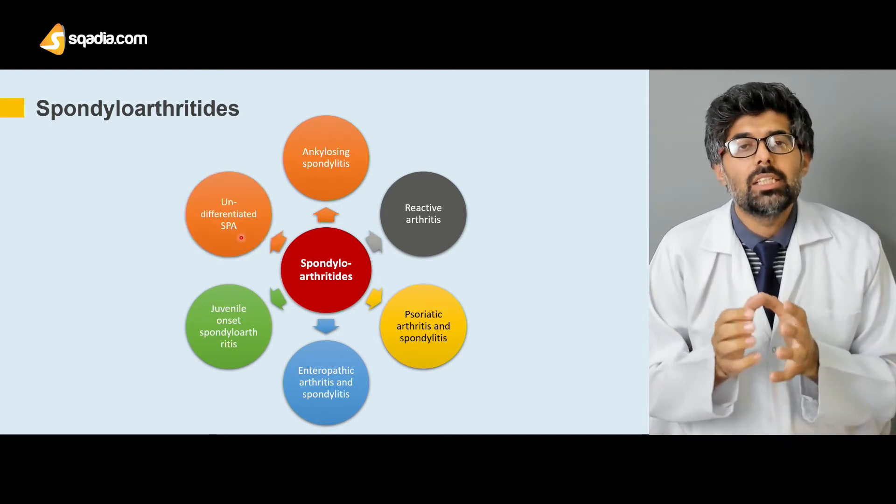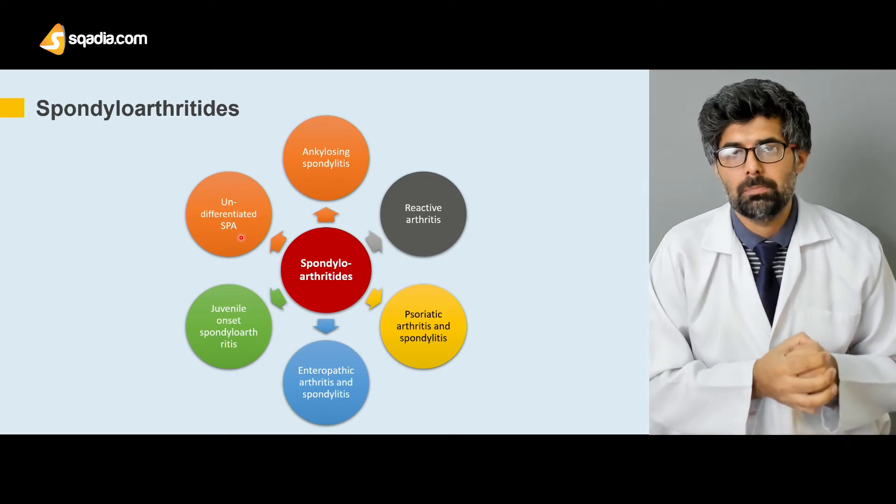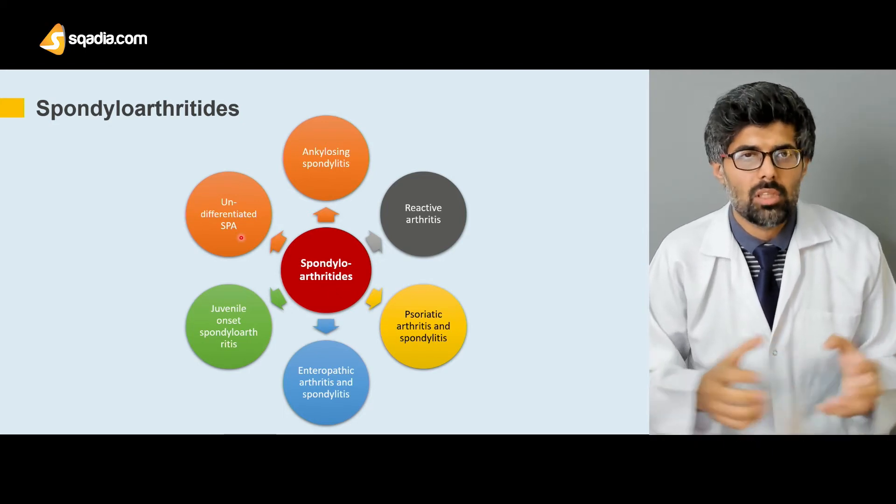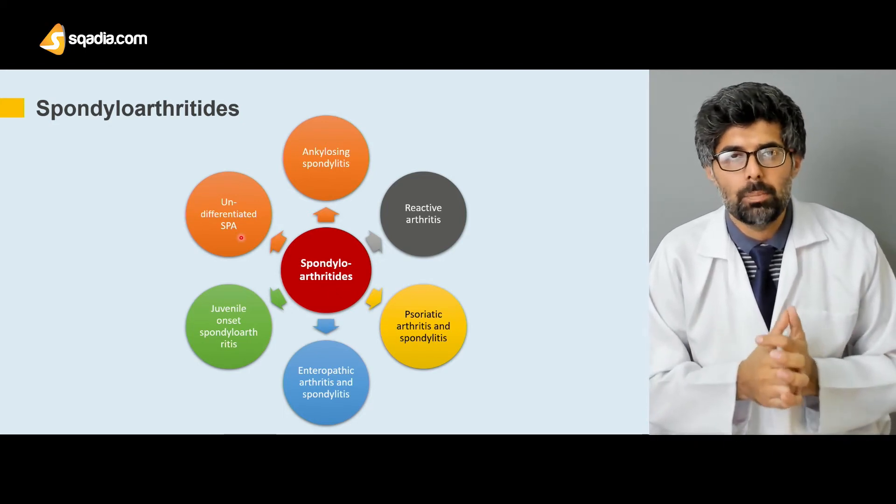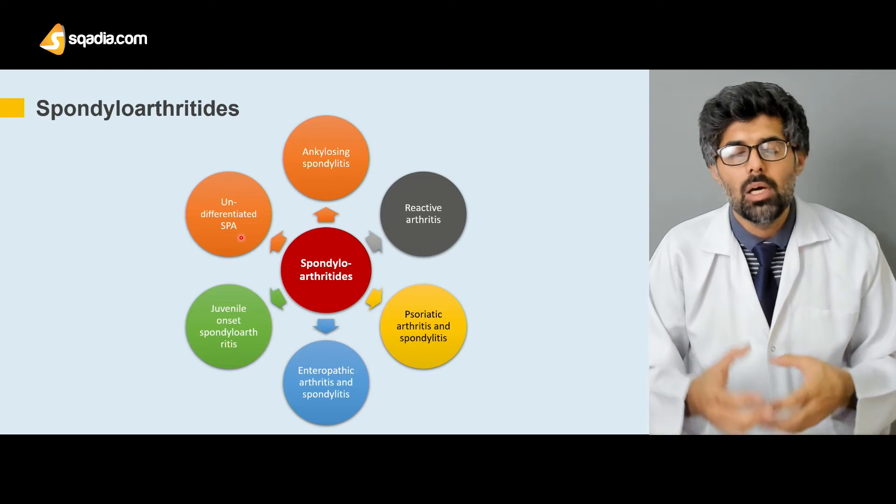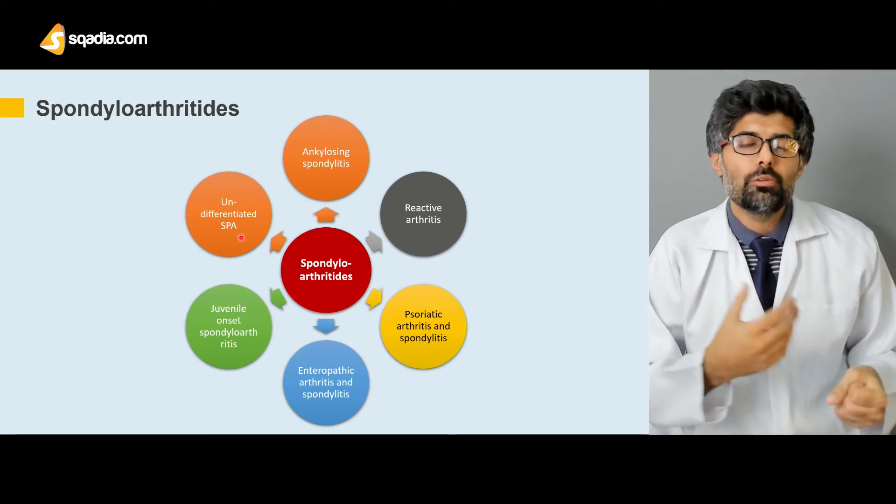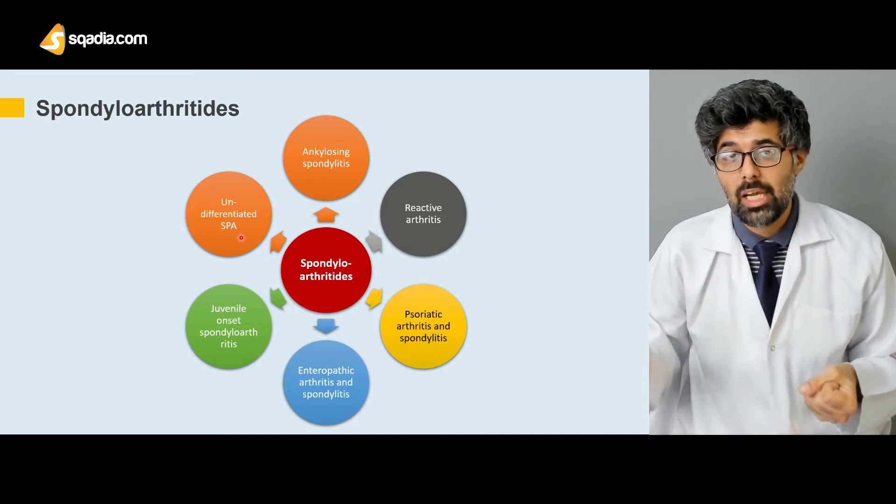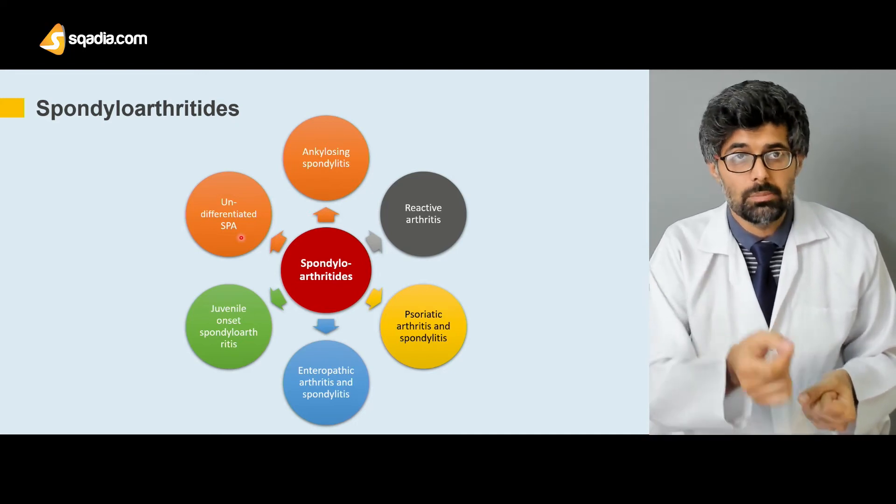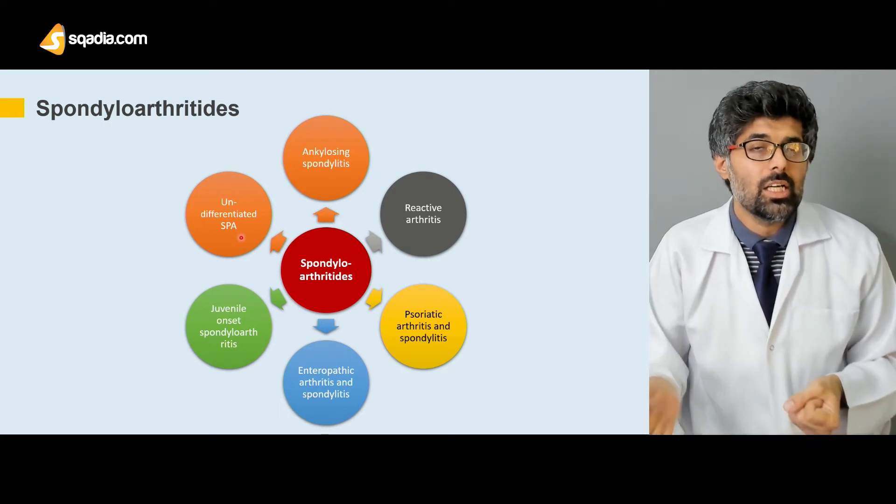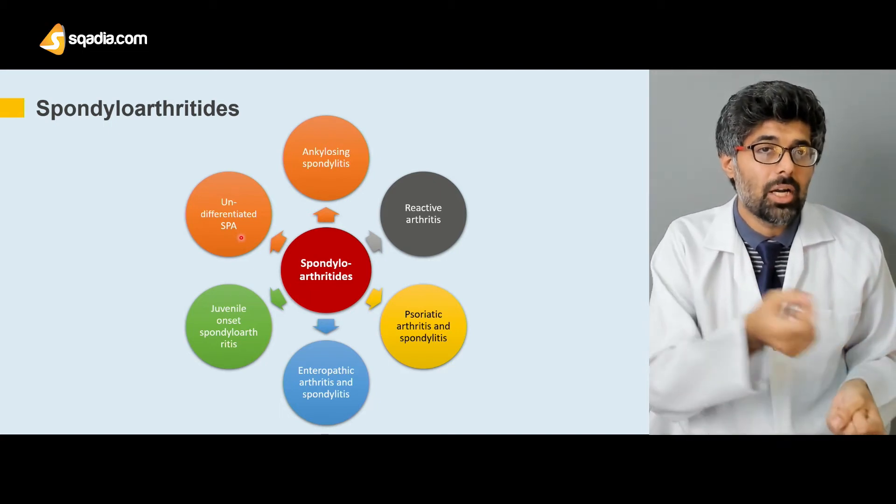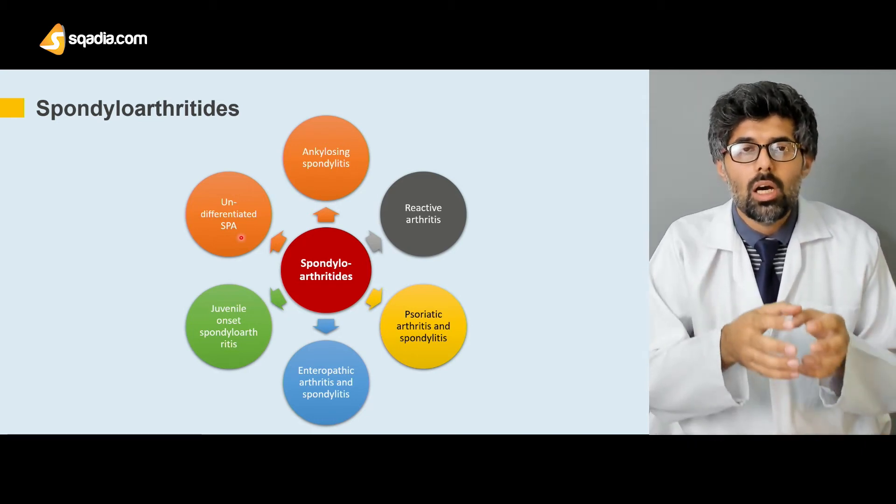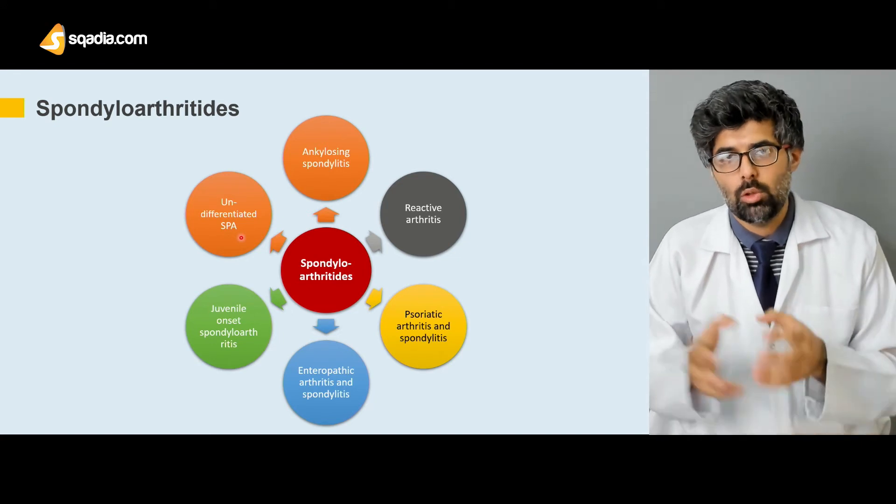Next is the undifferentiated spondyloarthritis. Usually undifferentiated and juvenile spondyloarthritis are clumped together because they usually happen at the same time. But juvenile spondyloarthritis is recognized by its onset, the age at which the symptoms appear, while undifferentiated is defined by the inability of the lesions to complete their course of pathogenesis.